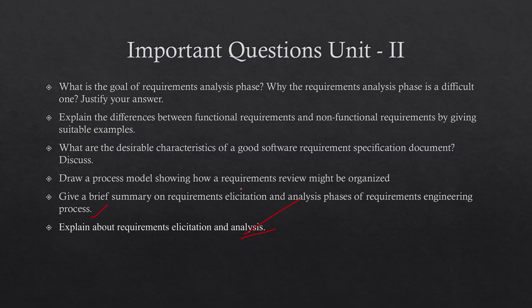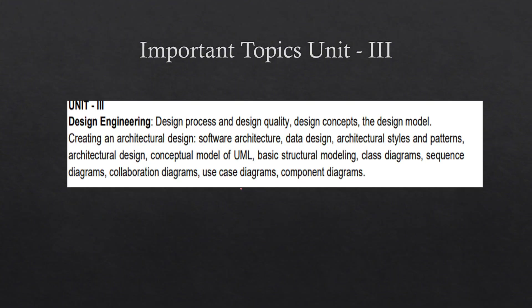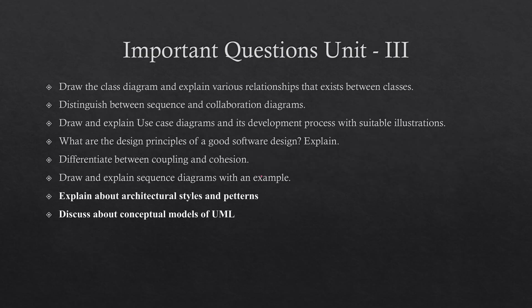For Unit 3, the important topics are software architecture and the conceptual model of UML — specifically use case diagrams. If you are good at studying software architectures and have the models down, this unit will help you; otherwise it is an optional one. Two questions from this unit appeared in the latest previous exam. If you are well-prepared on software architecture models, prepare this unit accordingly.